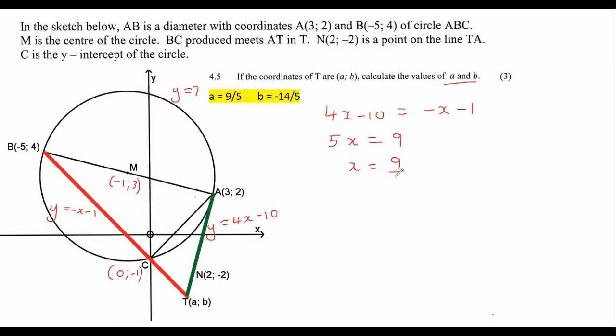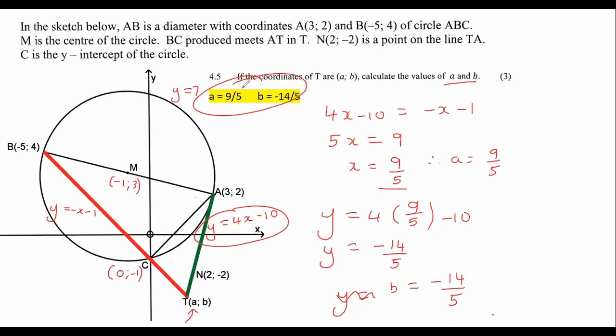Then to find B or to find Y, you would plug this found value of A or the value of X into any one of the equations. I'm going to choose this one. If we do this, we get negative 14 over 5, and so B is equal to negative 14 over 5, and those are the answers over there.